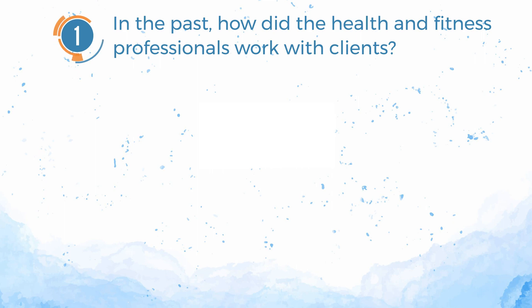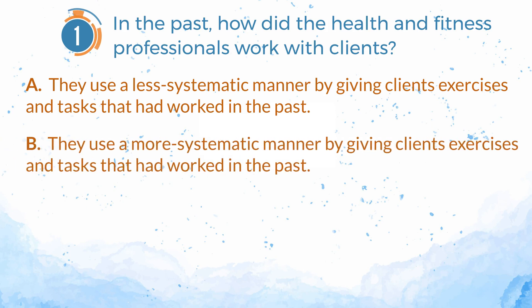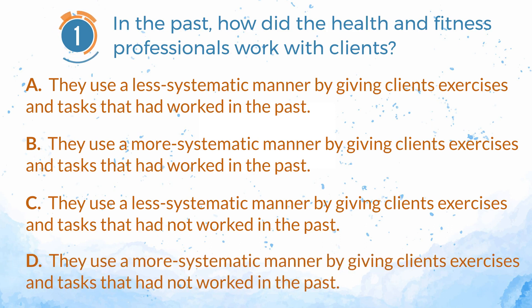Number 1. In the past, how did the health and fitness professionals work with clients? A. They used a less systematic manner by giving clients exercises and tasks that had worked in the past for the trainer or the trainer's other clients. B. They used a more systematic manner by giving clients exercises and tasks that had worked in the past for the trainer or the trainer's other clients. C. They used a less systematic manner by giving clients exercises and tasks that had not worked in the past for the trainer or the trainer's other clients. D. They used a more systematic manner by giving clients exercises and tasks that had not worked in the past for the trainer or the trainer's other clients.